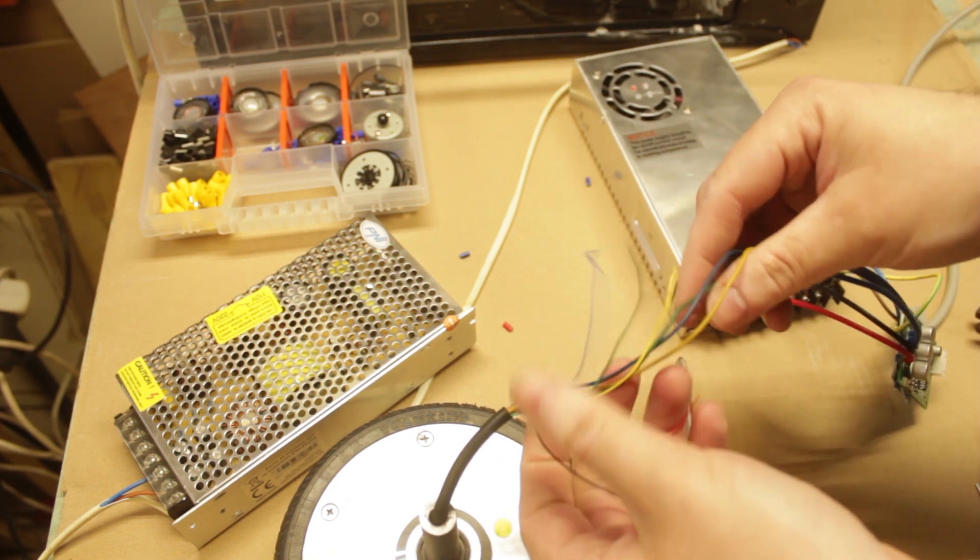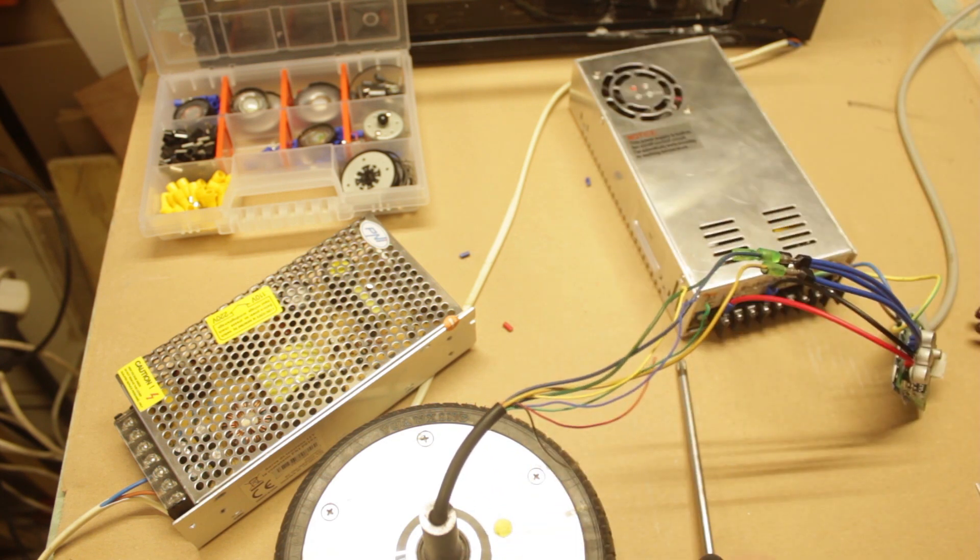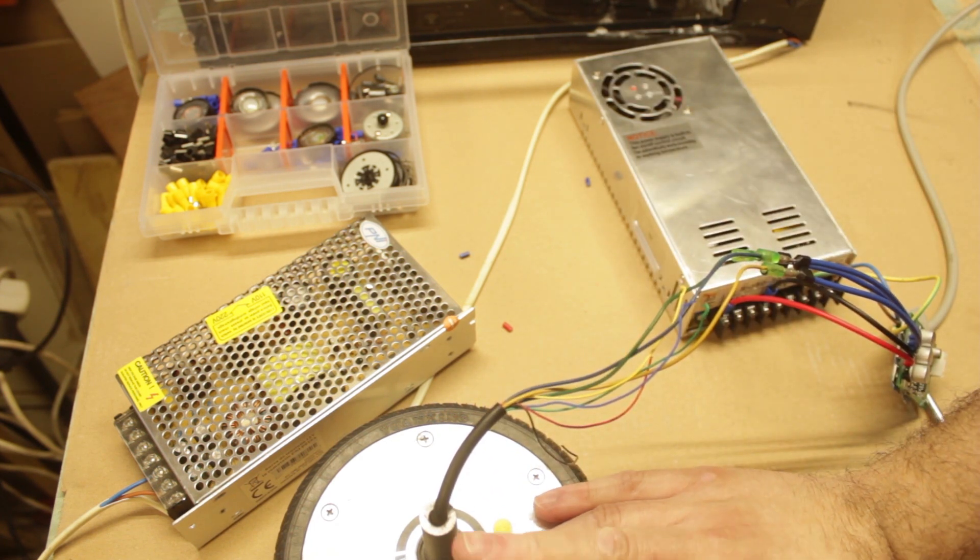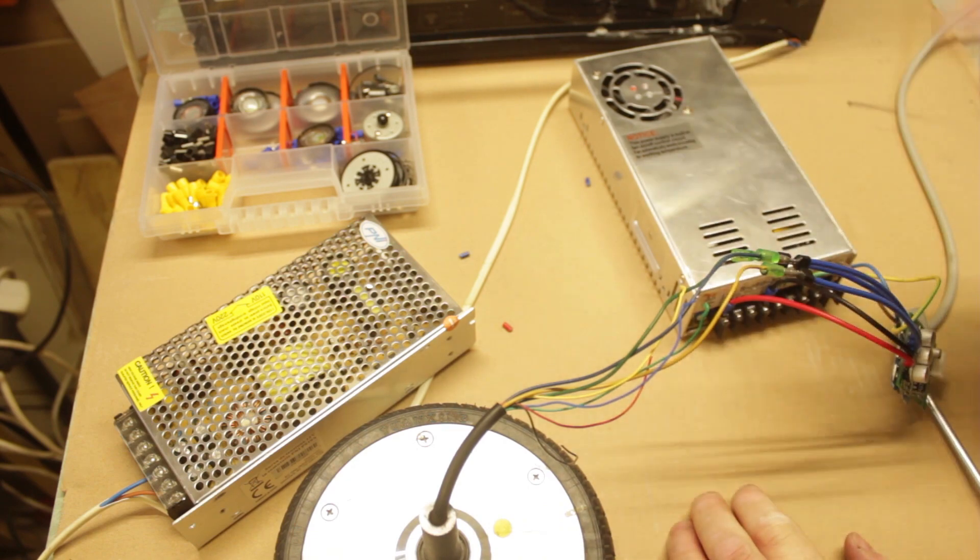This will connect to the motor itself through the three phases. I'm not going to connect any of the hall sensor wiring. What I'll do is I'll set this up in my vice and plug this in and try it out.